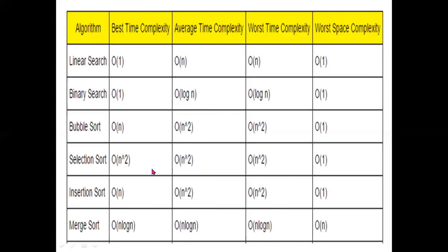Next, selection sort: best time complexity is O(n²), average time complexity is O(n²), and worst time complexity is O(n²). So for selection sort, best, average, and worst time complexity are all O(n²).